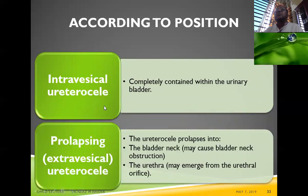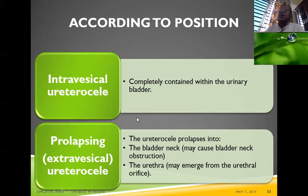An intravesical ureterocele is completely contained within the urinary bladder — this is the variety most commonly found but often missed. A prolapsing ureterocele is extravesical; the ureterocele prolapsed into the bladder neck, may cause bladder neck obstruction, and the ureterocele may emerge from the urethral orifice.